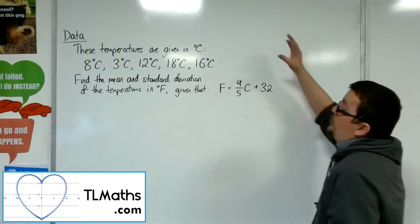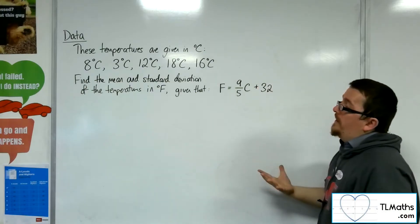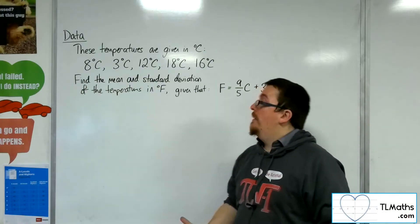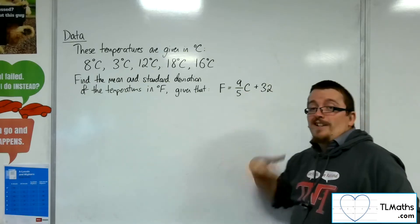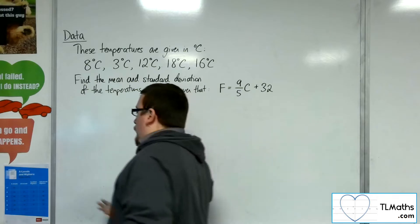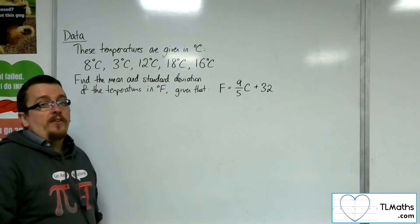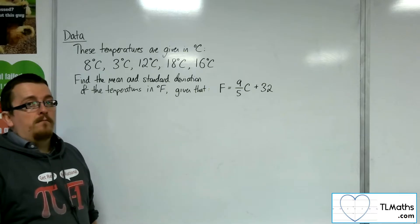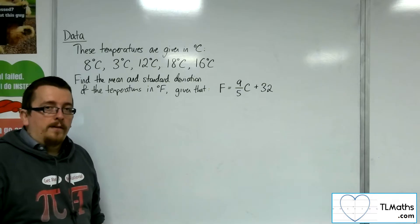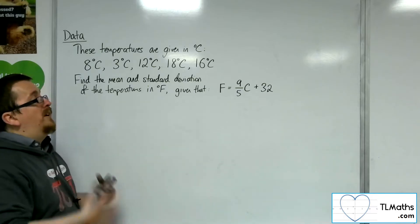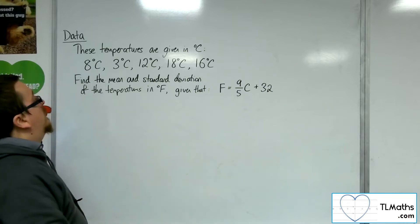So let's say I've got some temperatures that are given in degrees centigrade, and I'm asked to find the mean and standard deviation of the temperatures in degrees Fahrenheit, given the formula of how to go from centigrade into Fahrenheit. I could work out what each of these temperatures is in Fahrenheit and then find the mean and standard deviation of that, but I don't want to do it that way. The idea is I'm going to use linear coding here in order to make this quicker for myself.